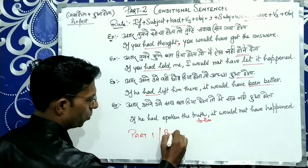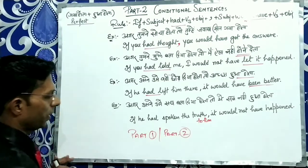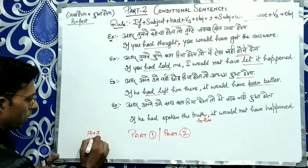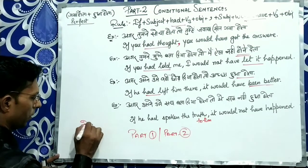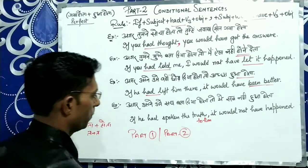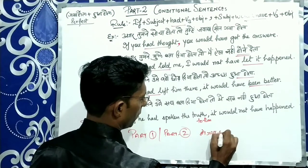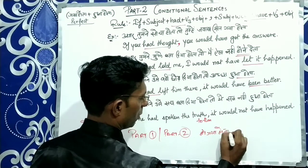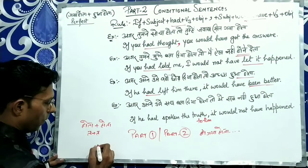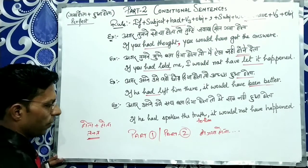There is a difference between conditional Part 1 and conditional Part 2. In Part 2, we use होता था, and in Part 1 ऐसा हो गया होता or वैसा हो गया होता — we use a different structure. Please do watch the Part 1 video as well.